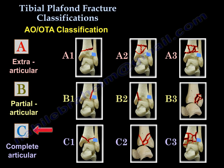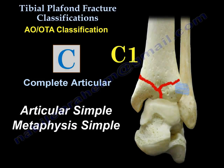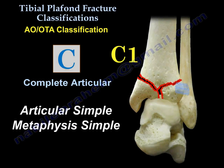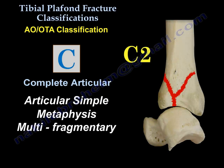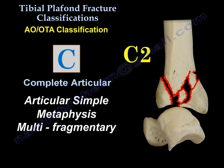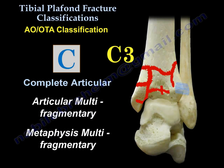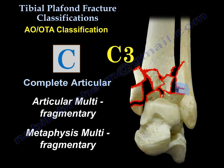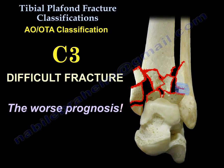The pylon fracture type C is complete articular and has three subtypes. C1 is articular simple and metaphyseal simple. C2 is articular simple with metaphyseal multi-fragments. C3 is the most severe: complete articular with multi-joint fragments and multi-metaphyseal fragments. C3 is the most difficult fracture and probably has the worst prognosis.